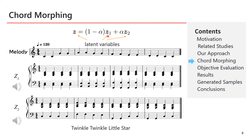Z1 and Z2 are latent variables of two sounds. For example, I'd like to show you a famous song, Twinkle Twinkle Little Star. When alpha is 0, the morphing result should be close to Z1, and if alpha is 1, it should be close to Z2.